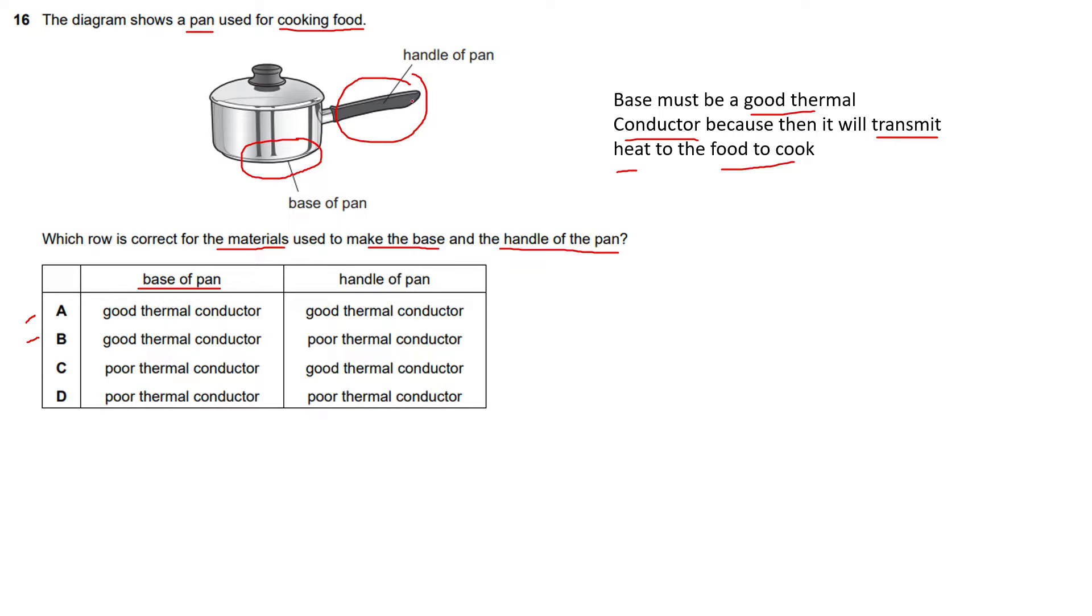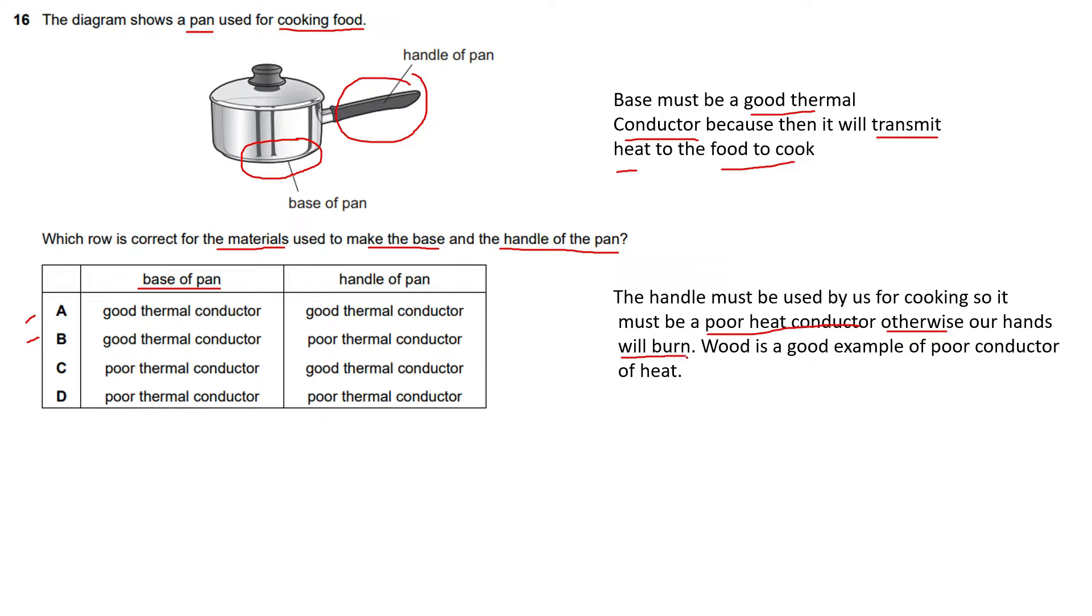Now the handle of the pan—the person who is cooking will hold that handle while cooking, so it must be a poor heat conductor. Otherwise, if it's a good thermal conductor, our hands will burn because the handle is used to hold it while cooking. So it must be a poor thermal conductor and not transmit heat energy, while the base must be a good thermal conductor.